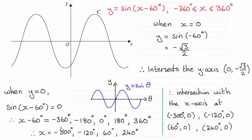So you've got x minus 60 equals those answers then. And then just add 60 degrees to each one of them, and that gives us our points of intersection with the x-axis.